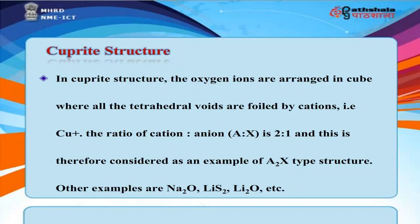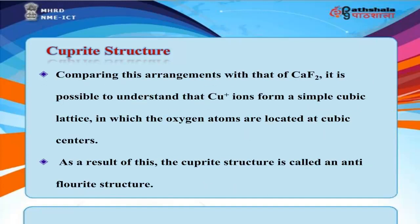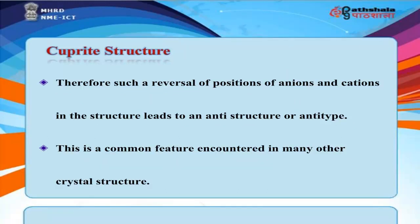In the cuprite (Cu₂O) structure, oxygen ions are arranged in a cube where all tetrahedral voids are filled by Cu⁺ cations. The ratio of cation to anion A:X is 2:1, making it an A₂X type structure. Other examples include Na₂O and Li₂O. Comparing with CaF₂, Cu⁺ ions form a simple cubic lattice with oxygen atoms at the cubic centers. As a result, the cuprite structure is called an anti-fluorite structure — a reversal of anion and cation positions leading to an anti-type, a common feature in many other crystal structures.